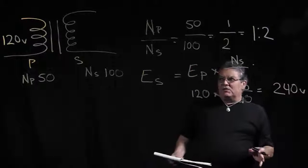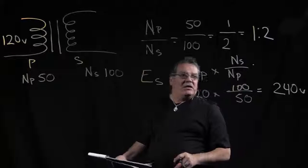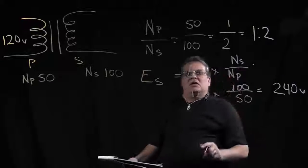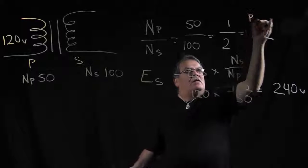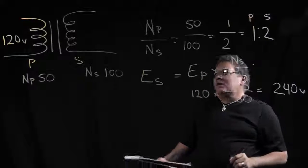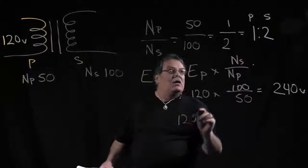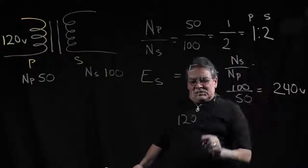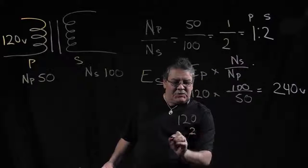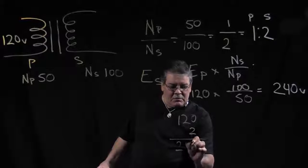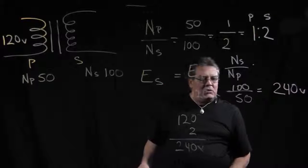Now I found kind of a shortcut to doing this. So basically, if we have a ratio of 1 to 2, and this is our primary, and this is our secondary, and we know a primary voltage of 120, and we have twice the amount of turns in the secondary, you can multiply that times 2 and come up with the same thing, 240. Okay?